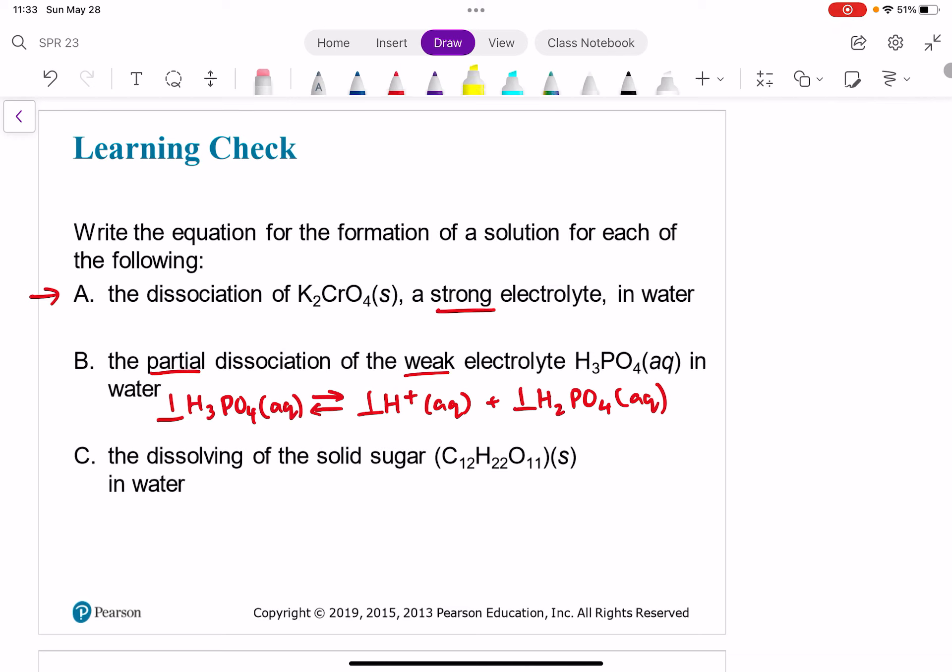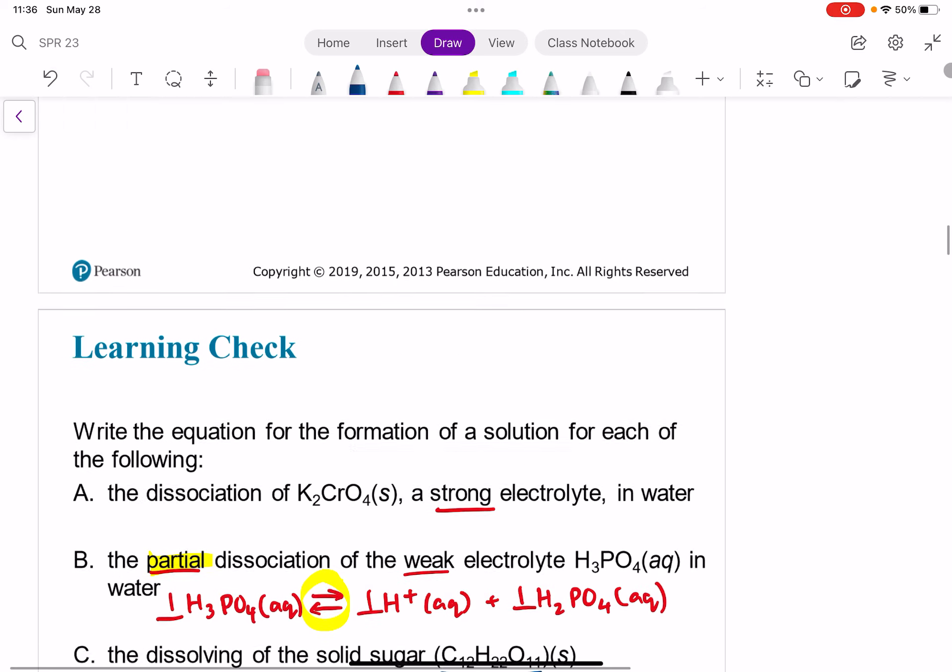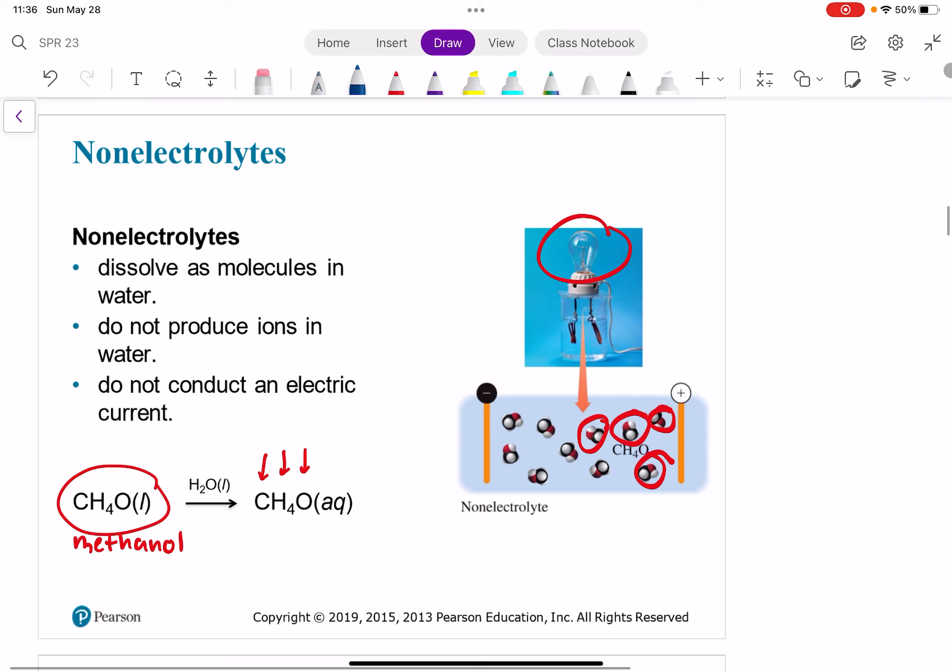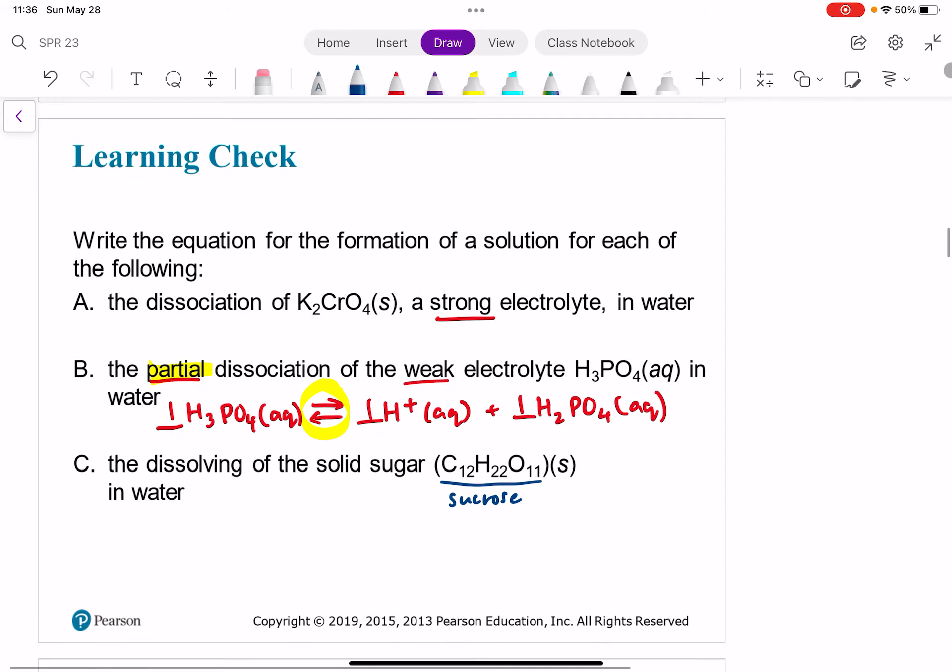So the main thing that I'd be looking for when you write these in your homework and on an exam would be your equilibrium arrows, or your forward and backward arrows, to show that it's partially dissociating. And then on the right, I'd be looking for ions. And then for this last one, this is actually not an electrolyte of any kind. It's a non-electrolyte. And the reason for that is this is table sugar. And when you dissolve this sucrose table sugar in water, it's actually just going to stay as a molecule. So just like this example up here, methanol, you've got CH4O. When you put that CH4 in water, it's just going to stay as a molecule. And it's not going to light up that light bulb. So this would be an example of the same idea. Solid sugar is not going to dissolve in water.